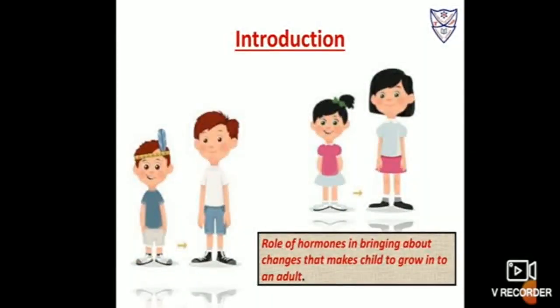Students, we have already learnt how animals reproduce and multiply in numbers. Now in this chapter, we will learn about changes that take place in the human body after which a person becomes capable for reproduction. In Chapter 9, we learnt about human reproductive organs, and here we shall discuss the role that hormones play in bringing about changes that make a child grow into an adult.